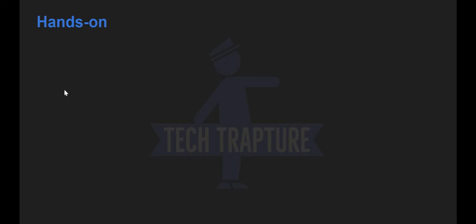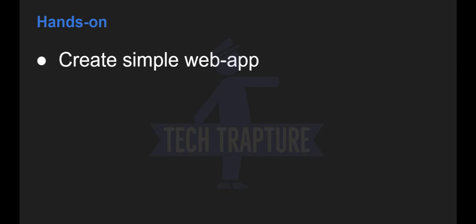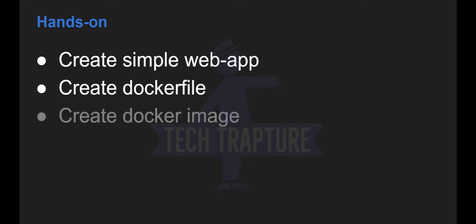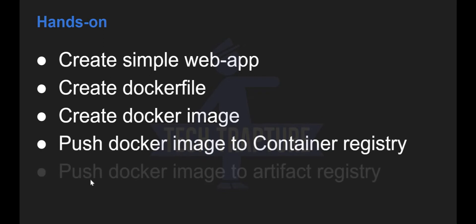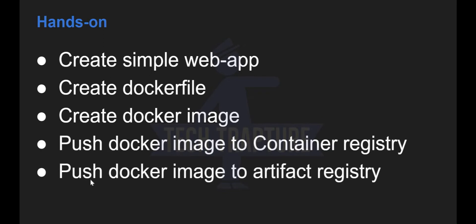Hello all. As we discussed in the last video, in this video we are going to create one simple web application first, then we will create a Dockerfile for that web application. Using that Dockerfile we will create one Docker image, and then we will try to push our Docker image to Container Registry as well as Artifact Registry. I will go to my Cloud Shell and create one simple web application, copying the code from Google documentation — just a five to six liner of code to print Hello World.